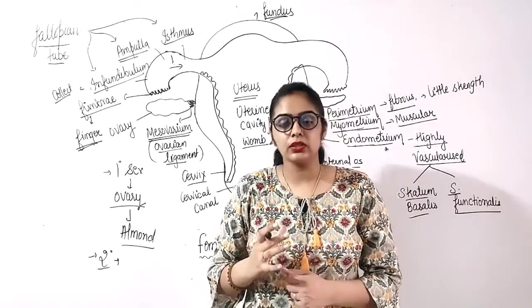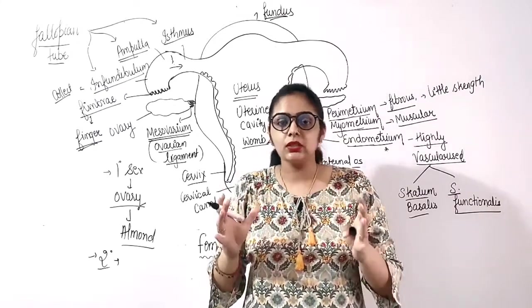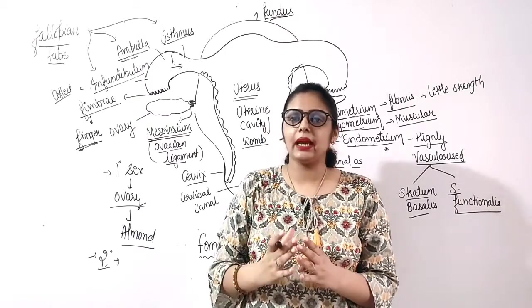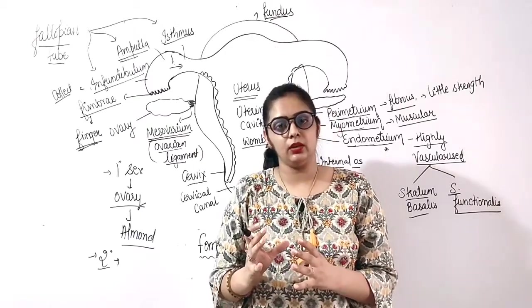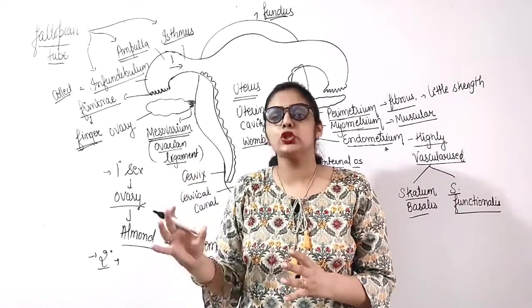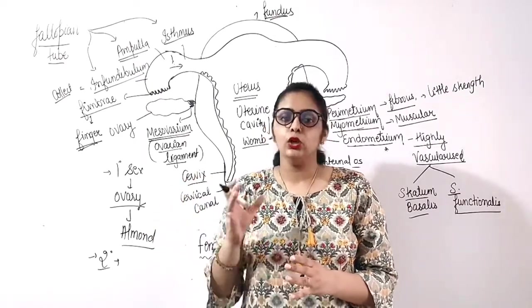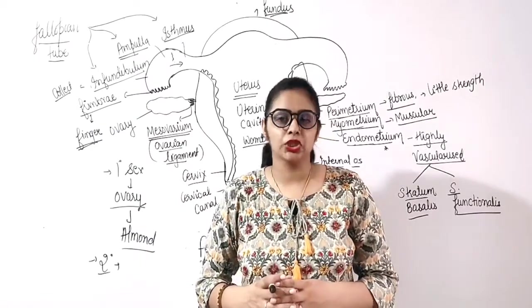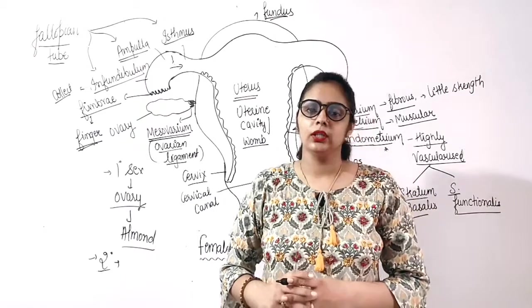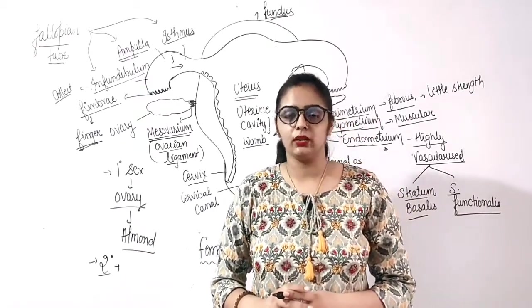In the next video, we will study about the external structure of an ovary, ovary ka structure, and how follicles are formed, formation of the follicles and the structure of a mature follicle, that is the graafian follicle, which will form the female gamete. So, that's it for today. If you like my video, then please share and subscribe my channel. Thank you.